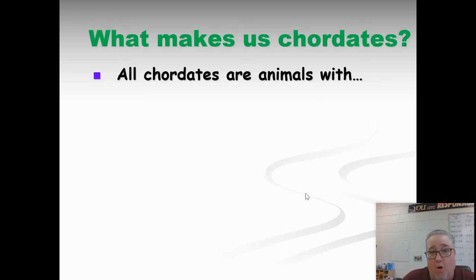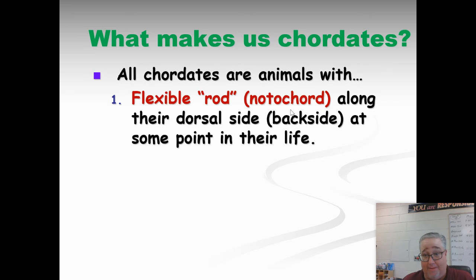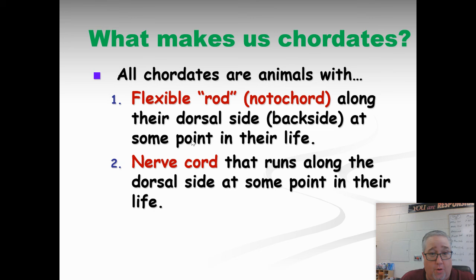The phylum we belong to is chordate. Chordates are unique types of animals — they have a flexible rod called a notochord along the dorsal side at some point in their life. In humans, the notochord is our vertebrae, our vertebral column — our backbone. In a shark, it's made of cartilage. There's also a nerve cord; the notochord protects the nerve cord, which runs along the inside. All chordates have both of these at some point in their life.